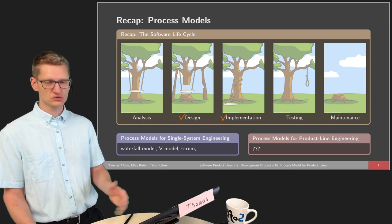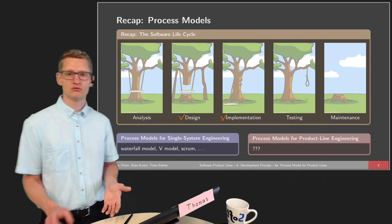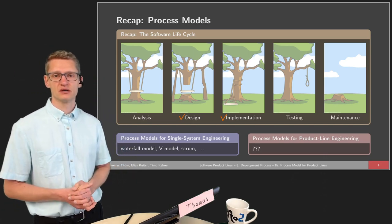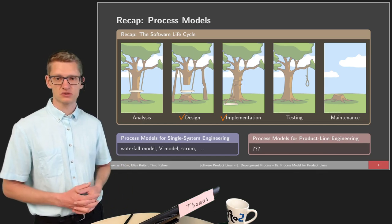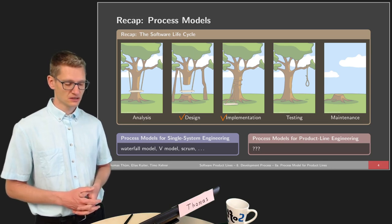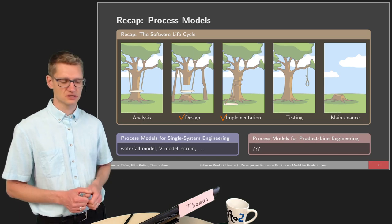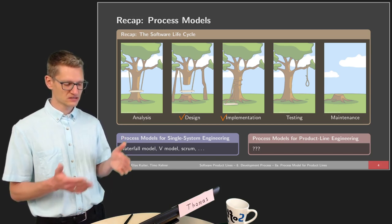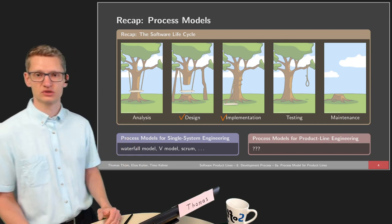We already talked about some phases in more detail. For instance, we talked about design patterns and how they can be used to support variability and product line development. We also talked about many implementation techniques with different advantages and drawbacks. But the question is how to connect those to analysis, to testing and maintenance. We will talk about this in more detail in this lecture.